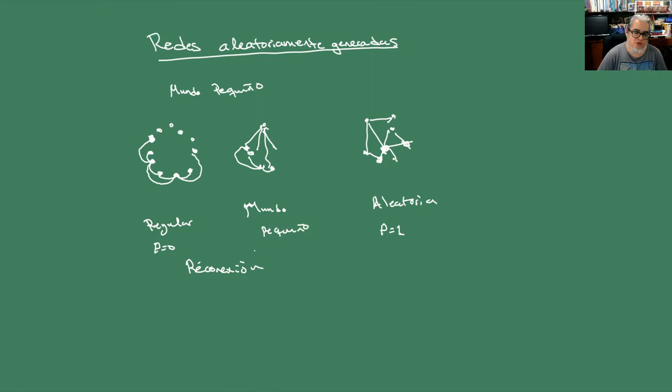Y entonces en medio teníamos redes de mundo pequeño. Algunos nodos no se reconexionan y otros sí. Entonces teníamos una distribución distinta. Teníamos aquí la de mundo pequeño que bien podríamos meterla dentro de las redes complejas. Entonces a veces pintan este tipo de diagramas y dicen, si aquí pusiéramos alguna medida de aleatoriedad...